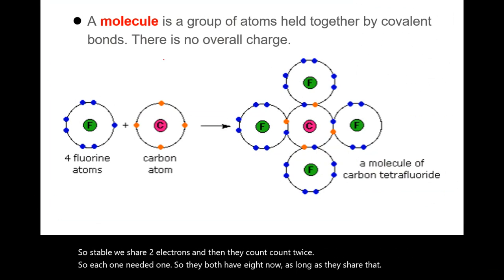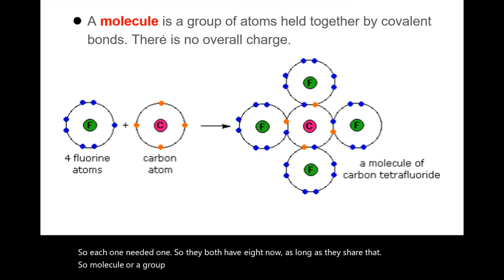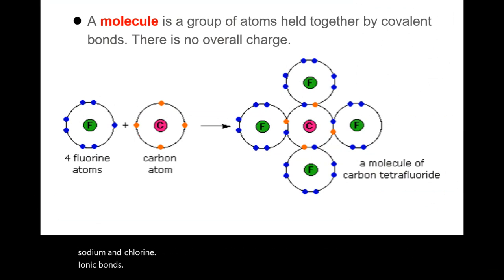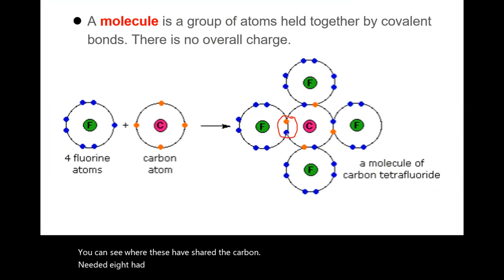A molecule is a group of atoms held together by covalent bonds with no overall charge, unlike ionic bonds such as sodium and chlorine. For example, carbon needed eight electrons and had four, so it shares with fluorine: two, four, six, eight — forming a complete outer shell.